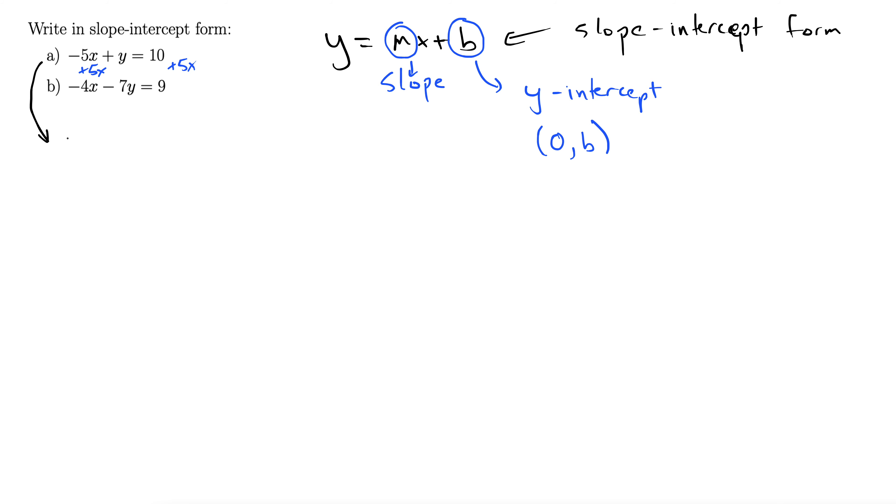Upon doing that, we're left with y equals 5x plus 10. Notice how I wrote the x term first. I didn't write it as 10 plus 5x - that wouldn't be quite right. Y equals 5x plus 10.